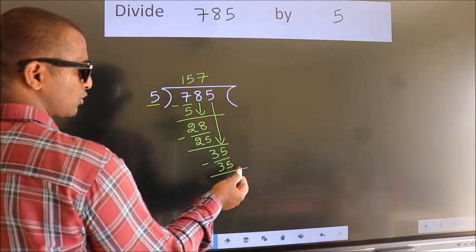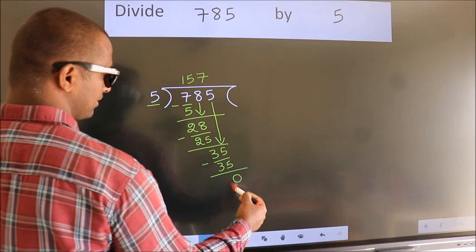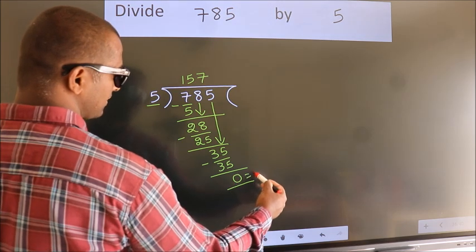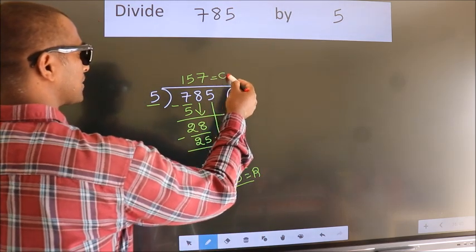No more numbers to bring it down. So, we stop here. This is our remainder. This is our quotient.